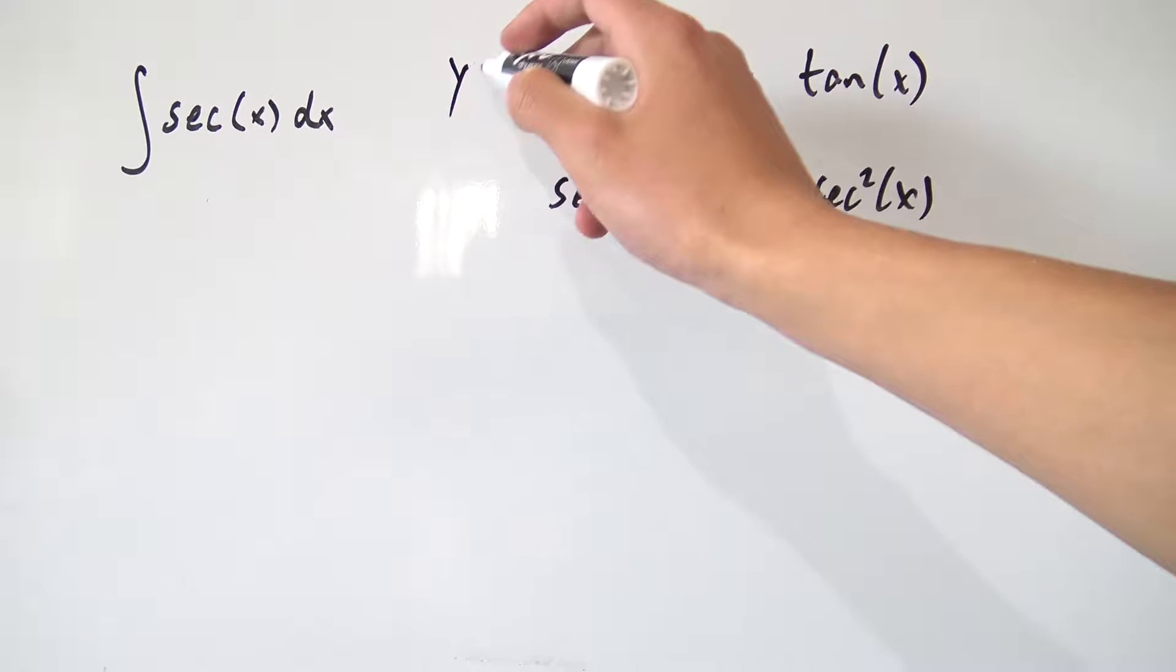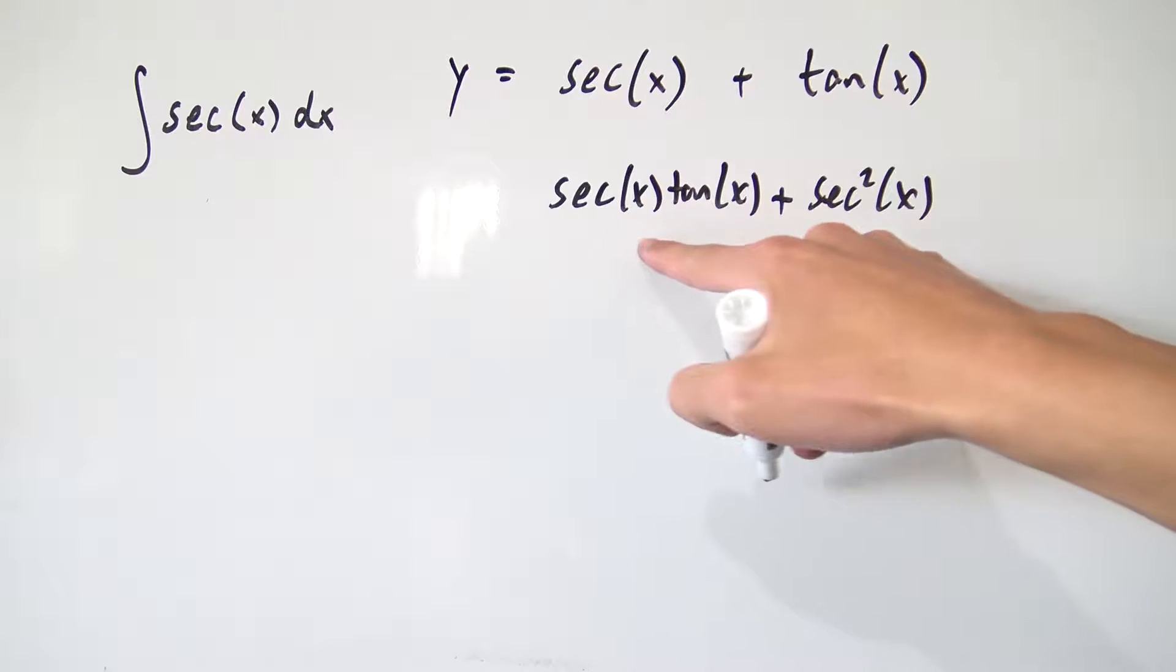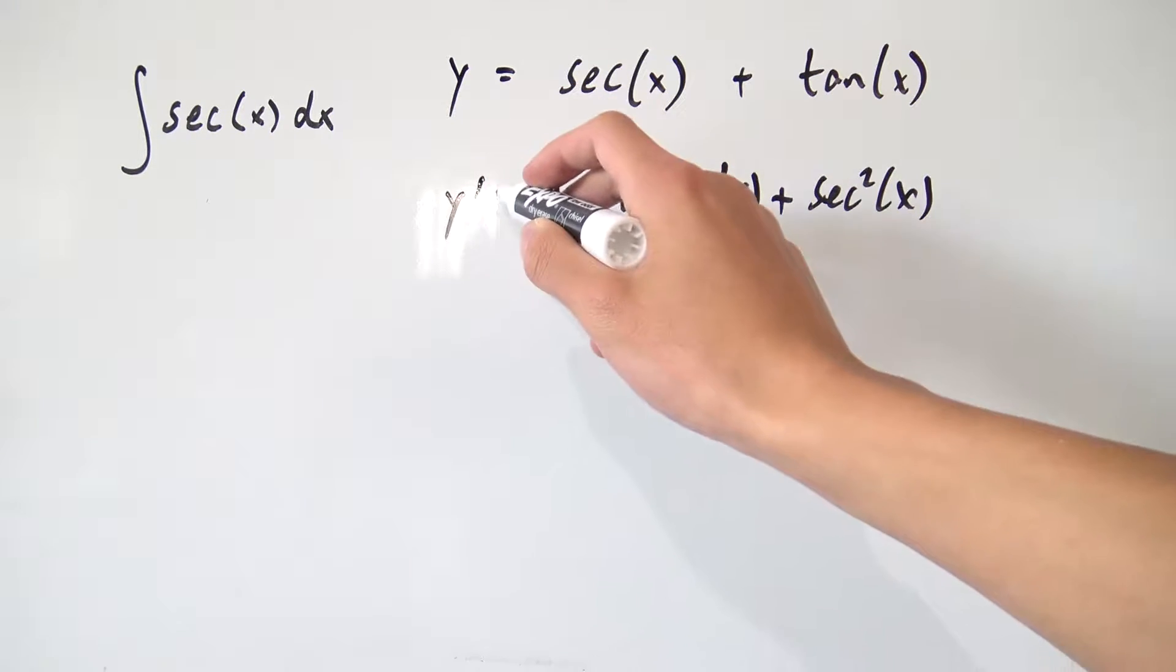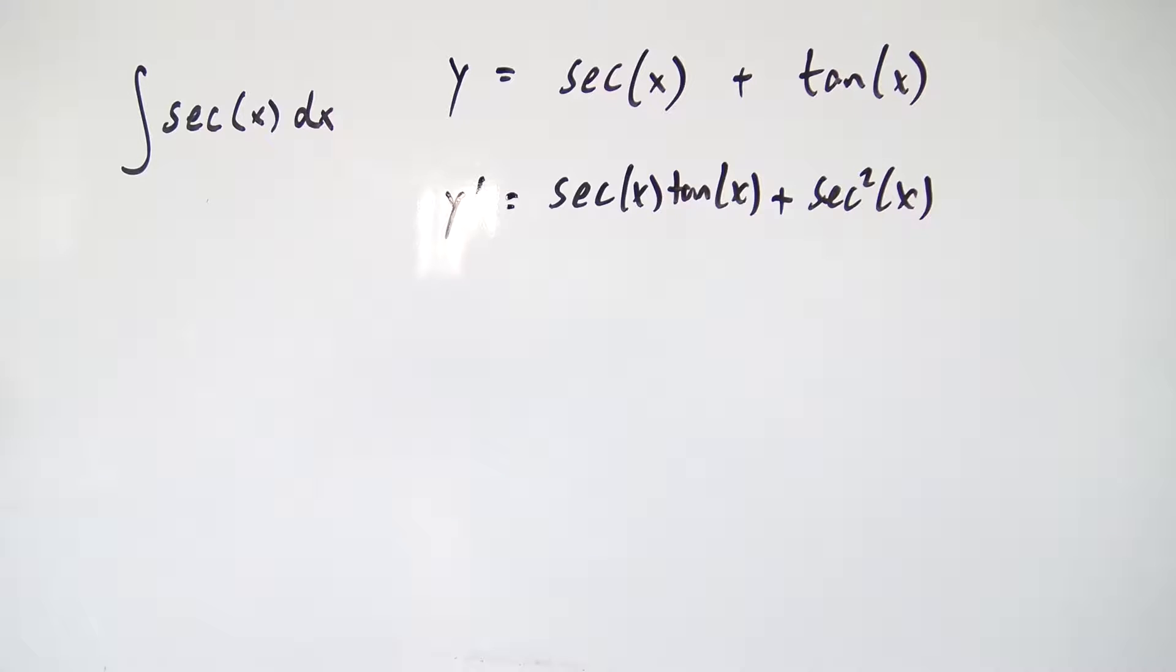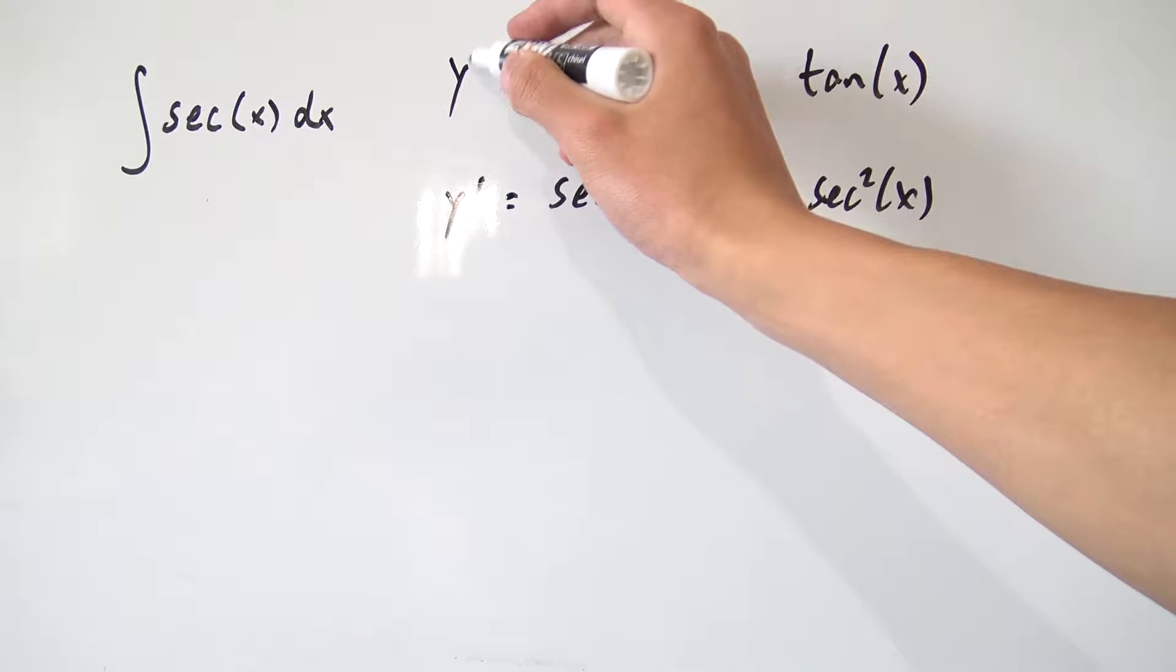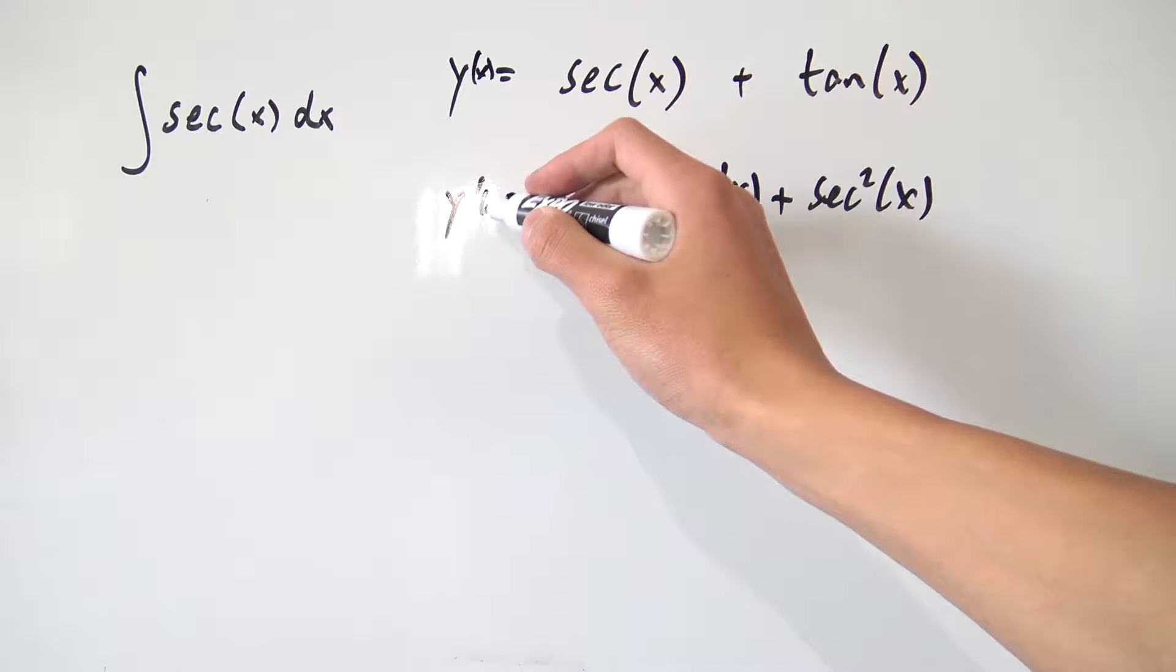And that's actually called the top line something. Let's call it y, for example. So this bottom line right here is y prime, which is the derivative of y. So y, just to be clear, is a function of x.